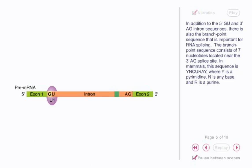In addition to the 5' GU and 3' AG intron sequence, there is also the branch point sequence that is important for RNA splicing. The branch point sequence consists of 7 nucleotides located near the 3' AG splice site. In mammals, this sequence is YN-C-U-R-A-Y, where Y is a pyrimidine, N is any base, and R is a purine.